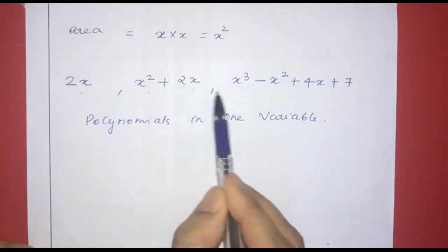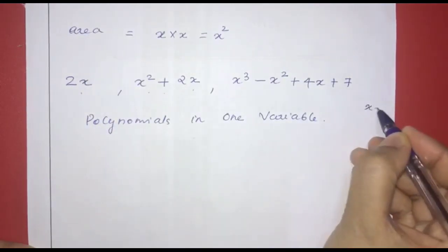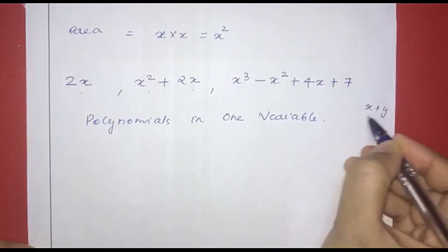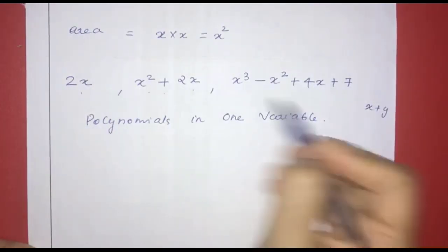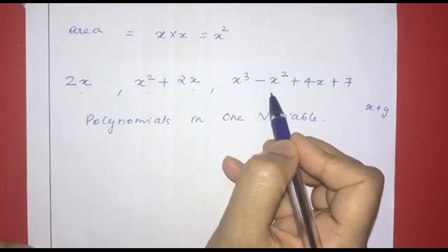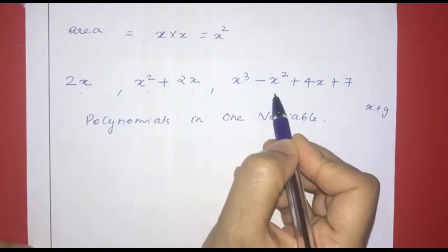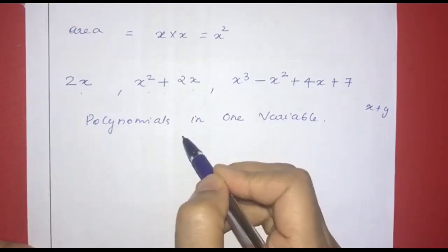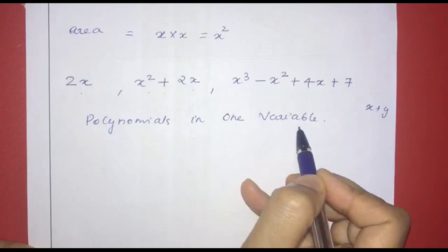This is polynomial in one variable. That variable is x. Consider x plus y — in this expression we have 2 variables. But in our examples, we have 1 variable in every expression, that is x. So we have polynomials in one variable.